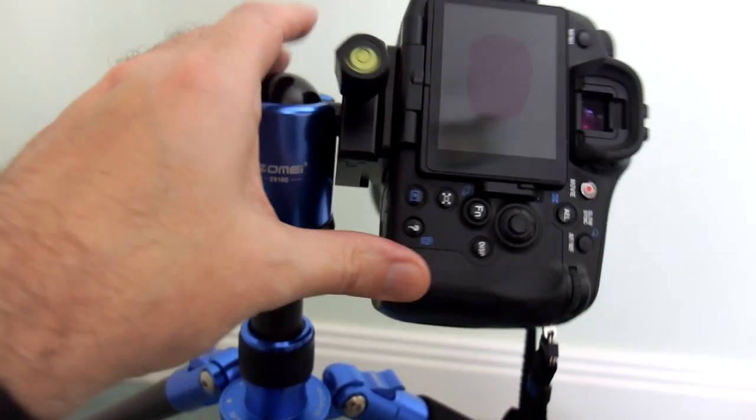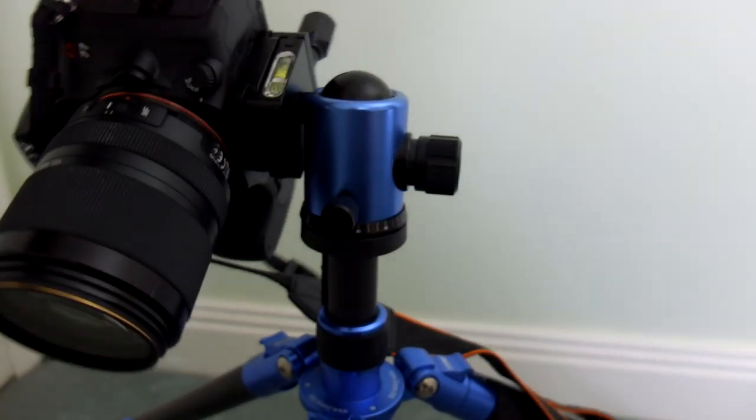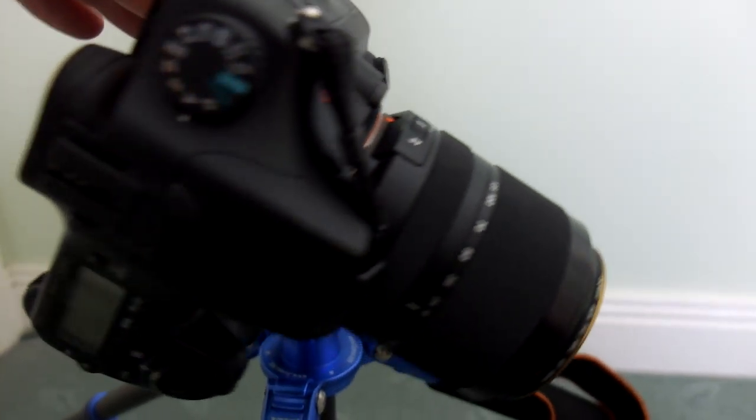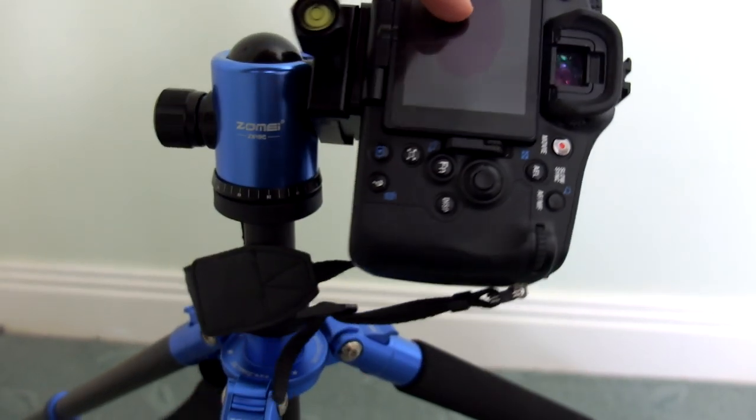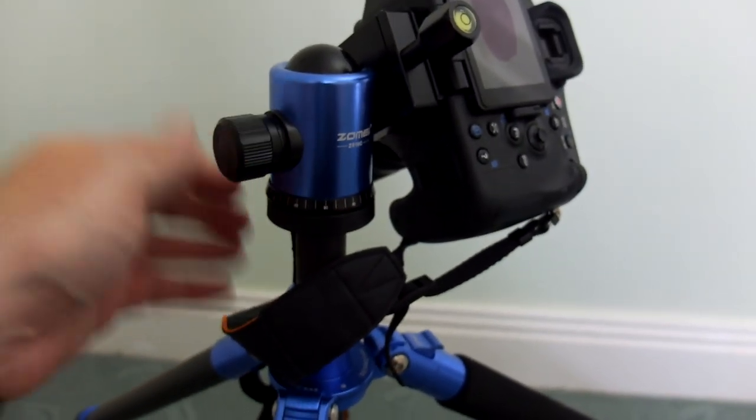This is a fairly light tripod for its size because of the carbon fiber compared to aluminum. You will notice the weight difference. It's about three and a half pounds or 1.5 kilos, the head and the legs included in that. So you might want to weight it down a bit if you're outside in a breezy condition.